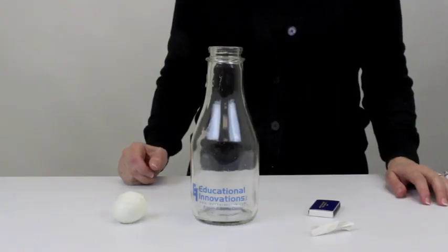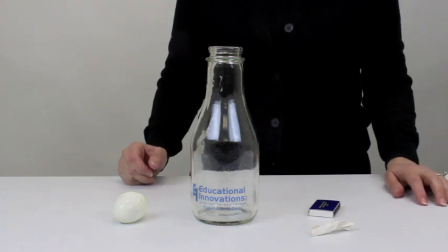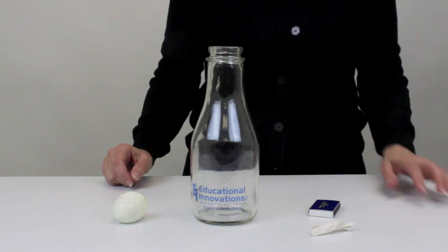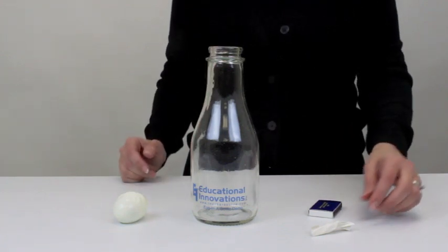Another classic activity that you can do with this is the egg in a bottle trick. It's not really a trick, it's all science. Things you'll need for this activity are one hard boiled egg, matches, milk bottle, and a piece of paper.